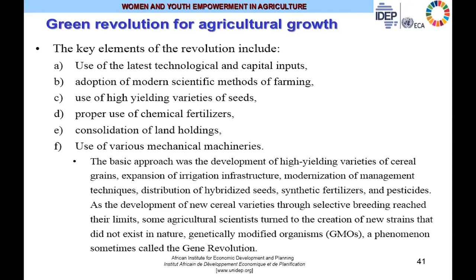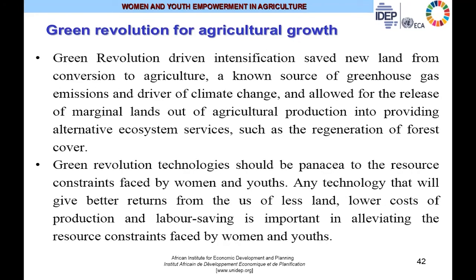The basic approach was the development of high-yielding varieties of seeds, expansion of irrigation infrastructure, modernization of management techniques, distribution of hybrid seeds, and synthetic fertilizers and pesticides. As the development of new cereal varieties through selective breeding reached their limits, some agricultural scientists turned to the creation of new strains that did not exist in nature — the genetically modified organisms (GMOs), a phenomenon sometimes referred to as the gene revolution. Green Revolution also drove intensification which saved new lands from conversion to agriculture, a known source of greenhouse gas emissions, and allowed for the release of marginal lands out of agricultural production into providing alternative ecosystem services such as regeneration of forest cover.